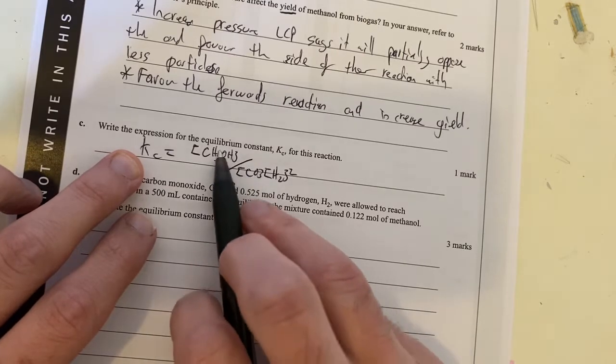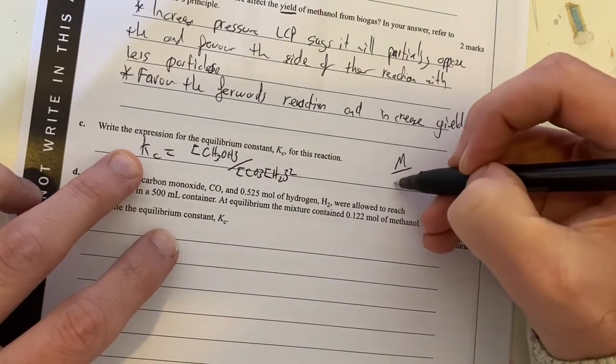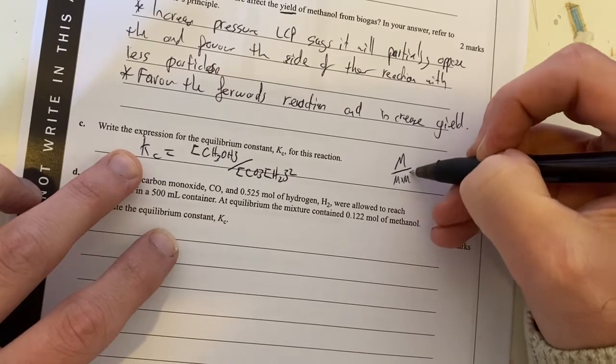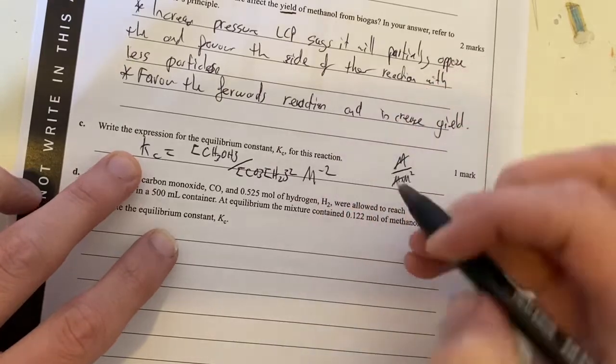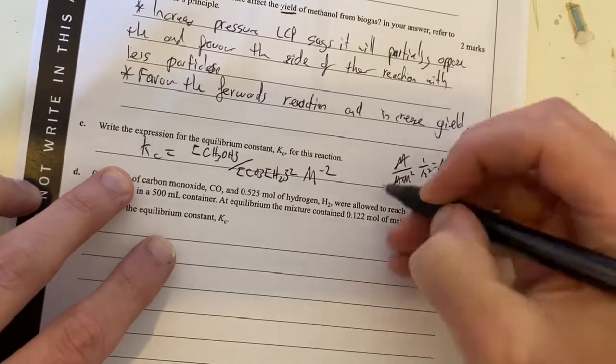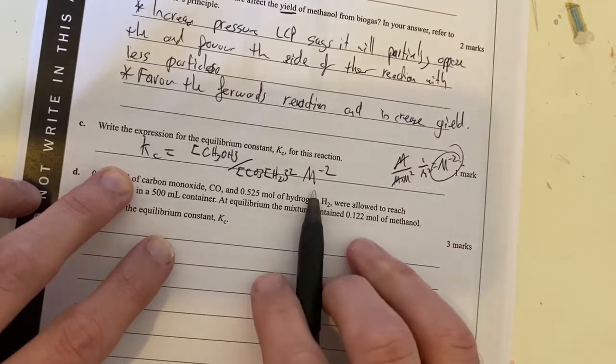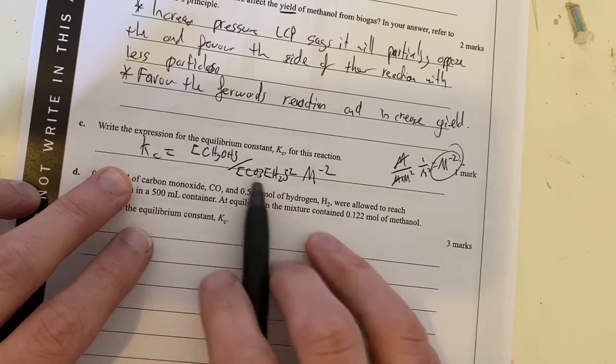I'm also going to put a unit for this, because equilibrium expression should have units. My unit is going to be molar divided by molar times molar squared, cancels out. So therefore, it's going to be molar to the negative 2 is my unit, which is 1 over molar squared equals molar to the negative 2. So therefore, my unit there is molar to the negative 2. That's my equilibrium expression.